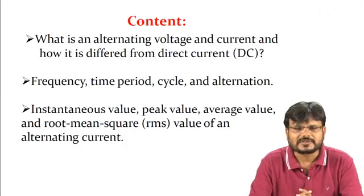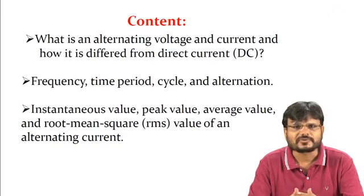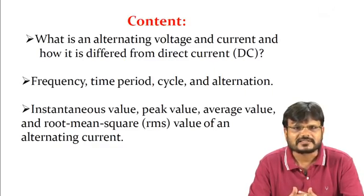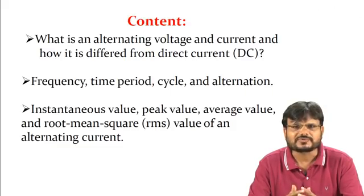In this topic we are going to discuss what is alternating voltage and current and how it differs from direct current. Then we will discuss what is frequency, time period, cycle, alternation, and also the instantaneous value, peak value, average value, and root mean square value of an alternating current.